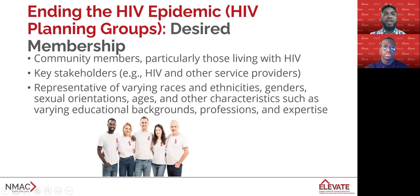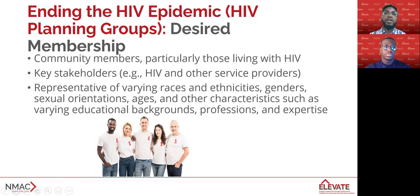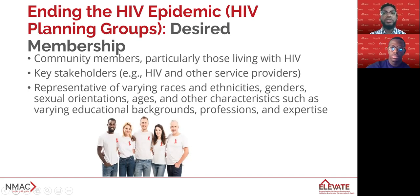The Ending the HIV Epidemic HIV planning group should reflect the local epidemic by involving representatives of populations with high prevalence of HIV infection and should also include HIV service providers — for example, community-based organizations, care providers from the public and private sectors, community health centers, mental health and substance abuse services, other governmental and non-governmental entities, non-traditional providers such as medical education training centers and community foundations, and philanthropic entities. Members should also be representative of varying races, ethnicities, genders, sexual orientations, ages, and other characteristics such as varying educational backgrounds, professions, and expertise.